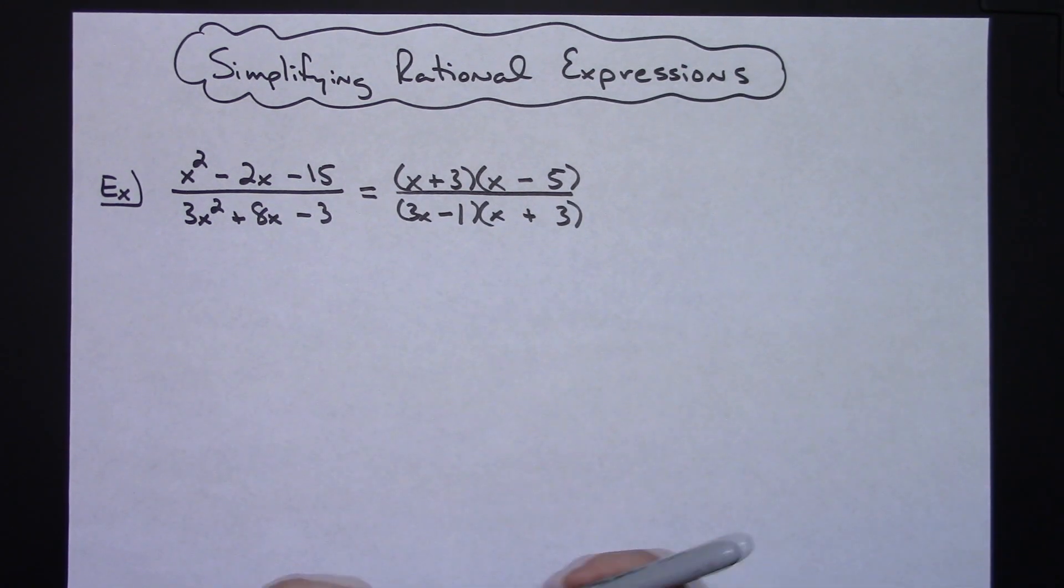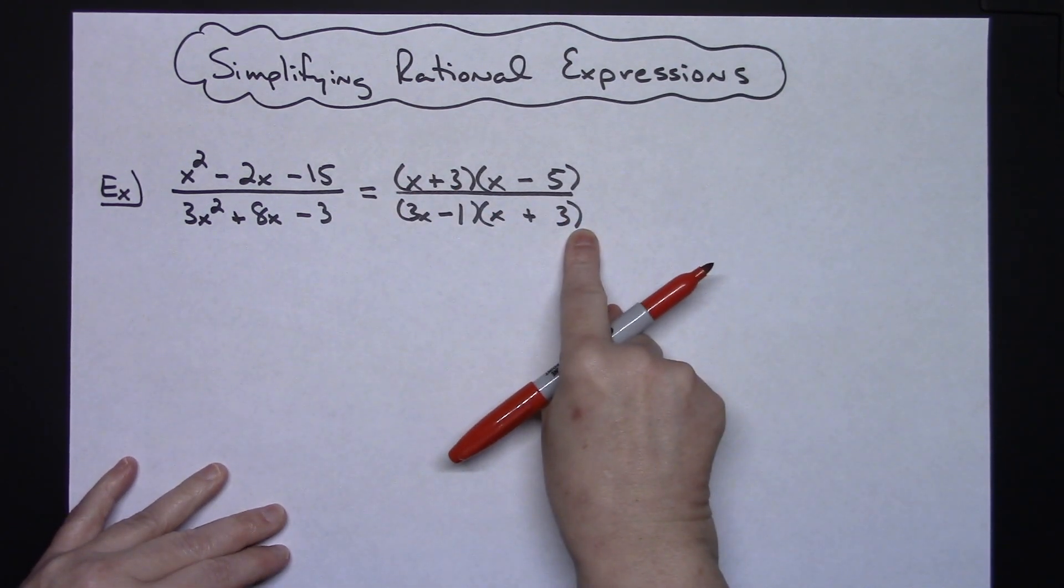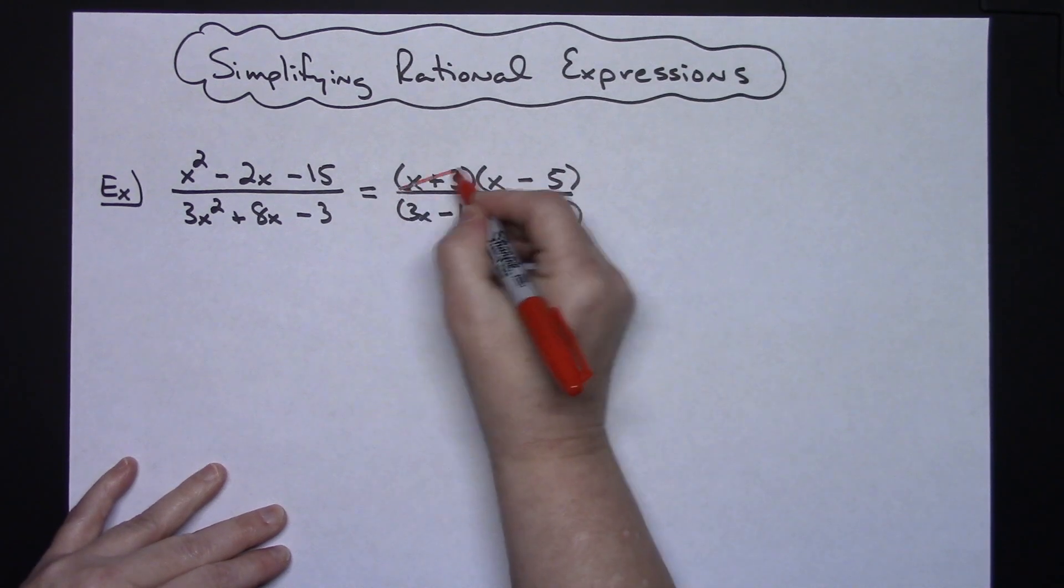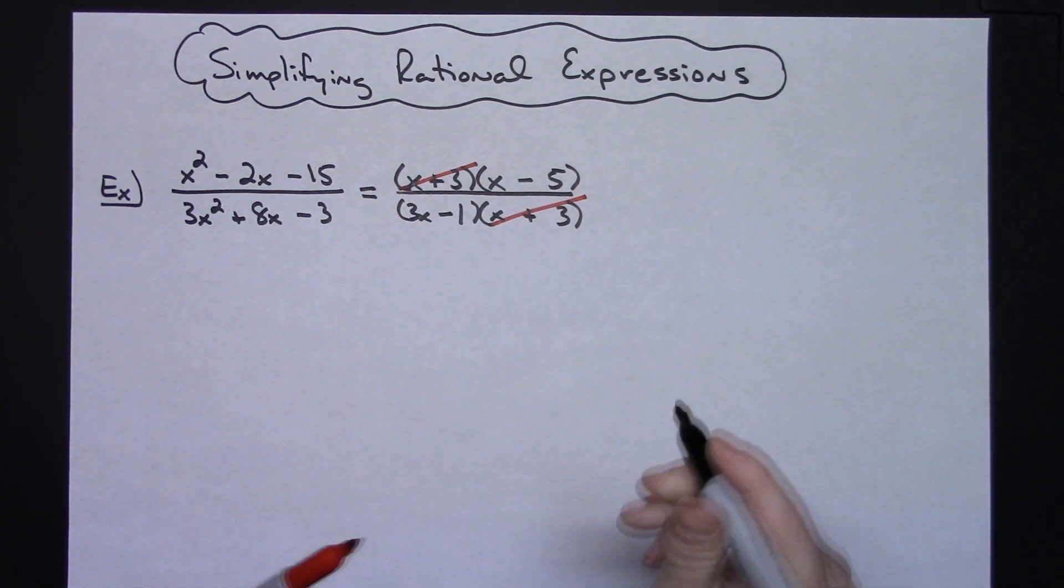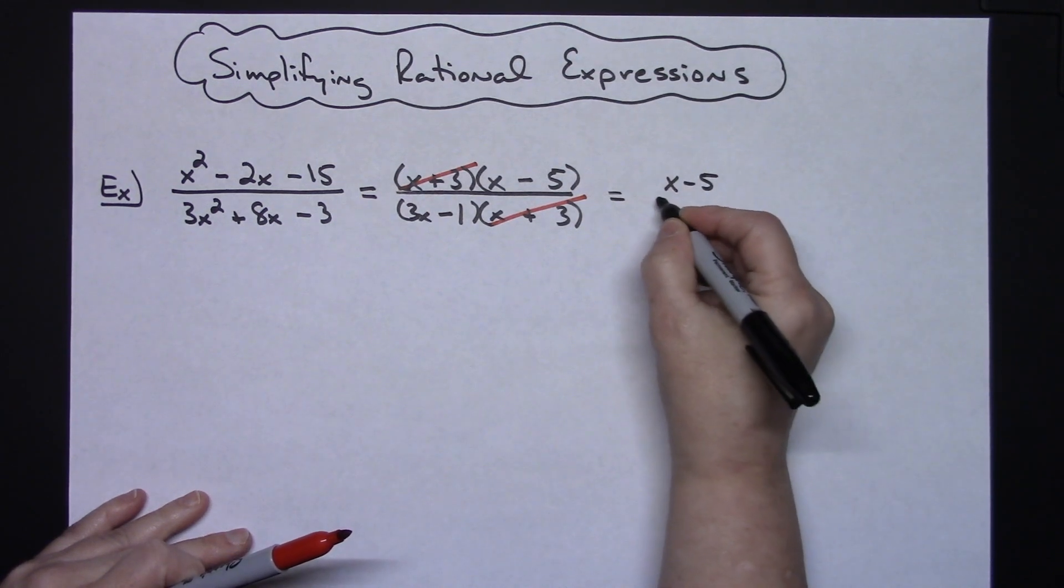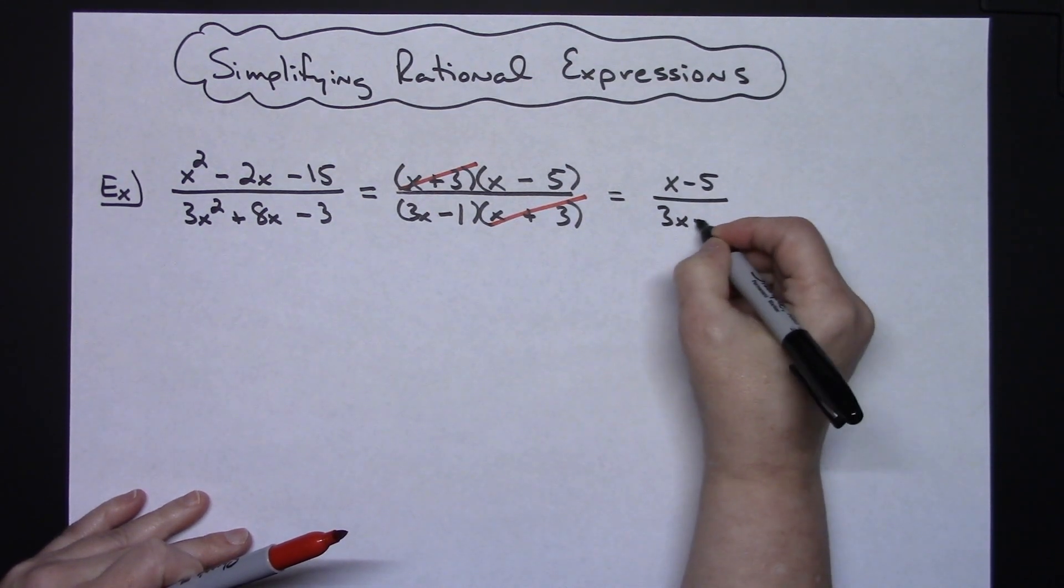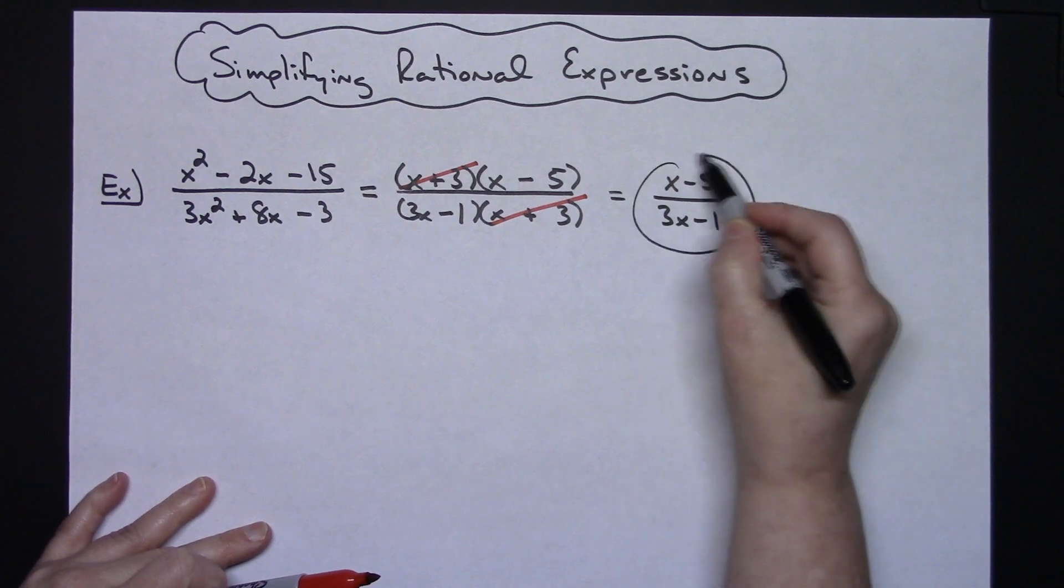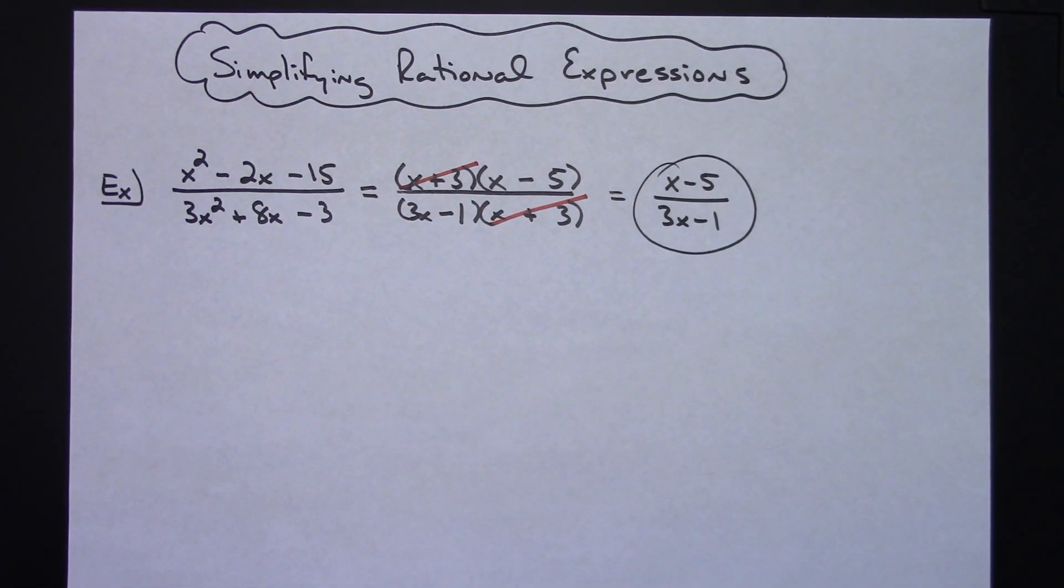All right now at this point hopefully you're going to have something that's going to match. I've got an x plus 3 on the top I've got an x plus 3 on the bottom so those are going to cross out and then that's going to leave me with an x minus 5 on the top and a 3x minus 1 on the bottom. So that one is a pretty straightforward just two trinomials guessing and checking.